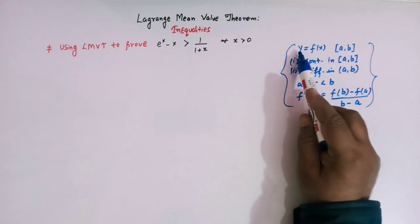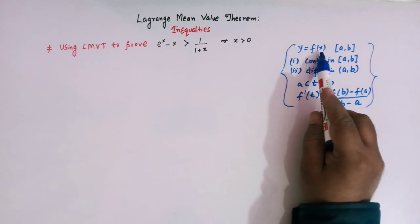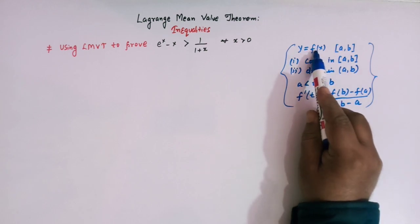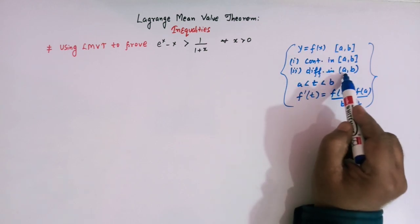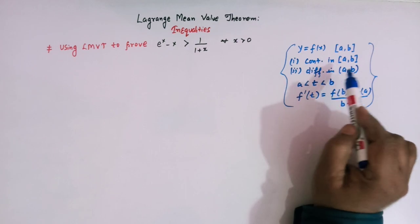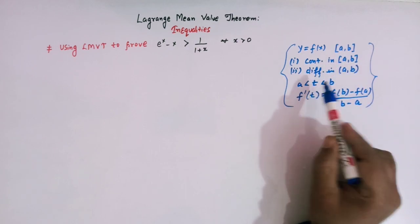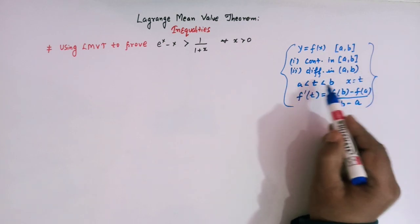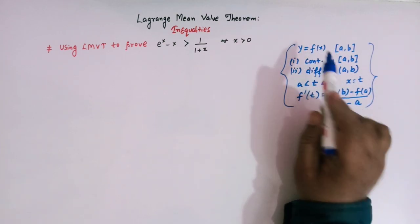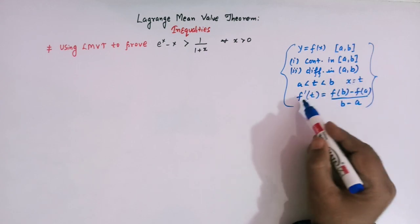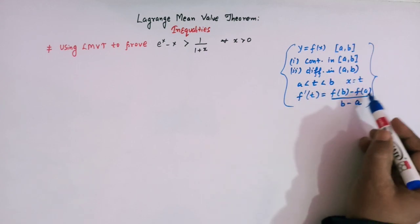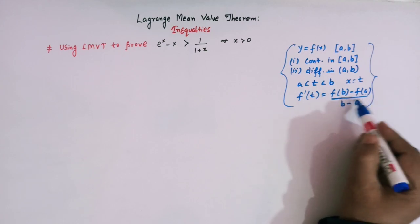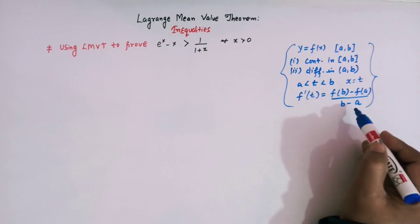then there must exist a point t lying between a and b such that the derivative of this function at point t, that is f'(t), must be equal to f(b) minus f(a) divided by b minus a. This is the statement of Lagrange's mean value theorem: f(x) must be continuous and differentiable in the interval, and there exists t in (a, b) such that f'(t) = [f(b) - f(a)] / (b - a).